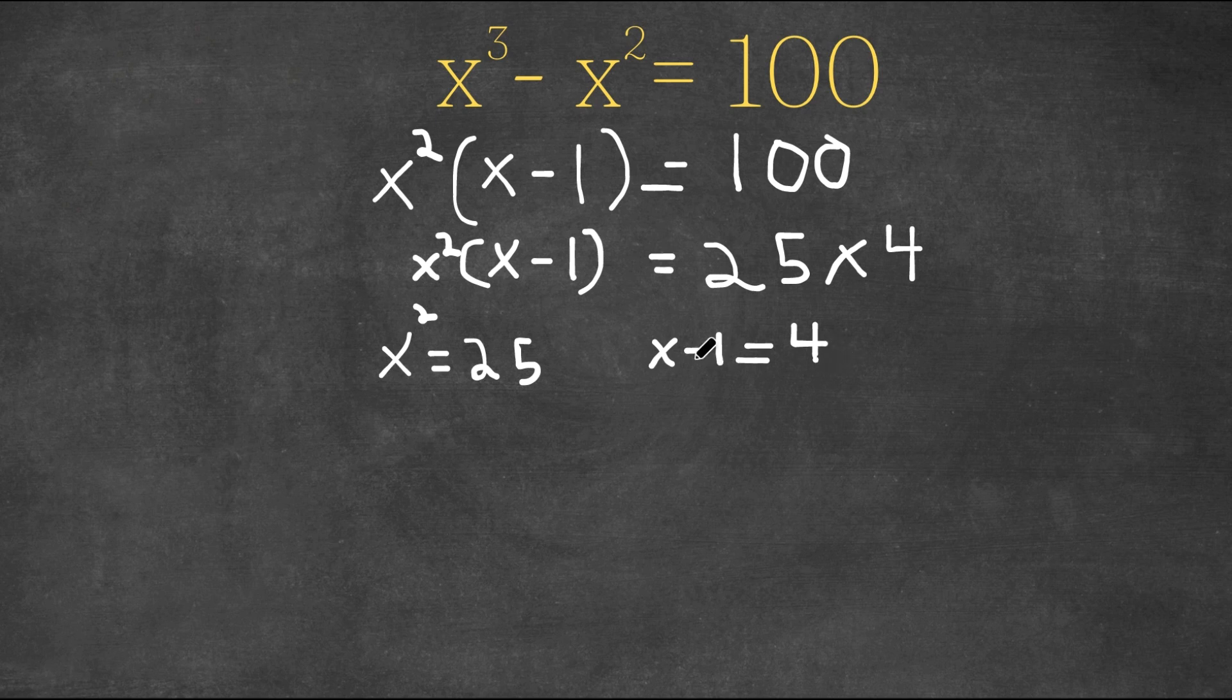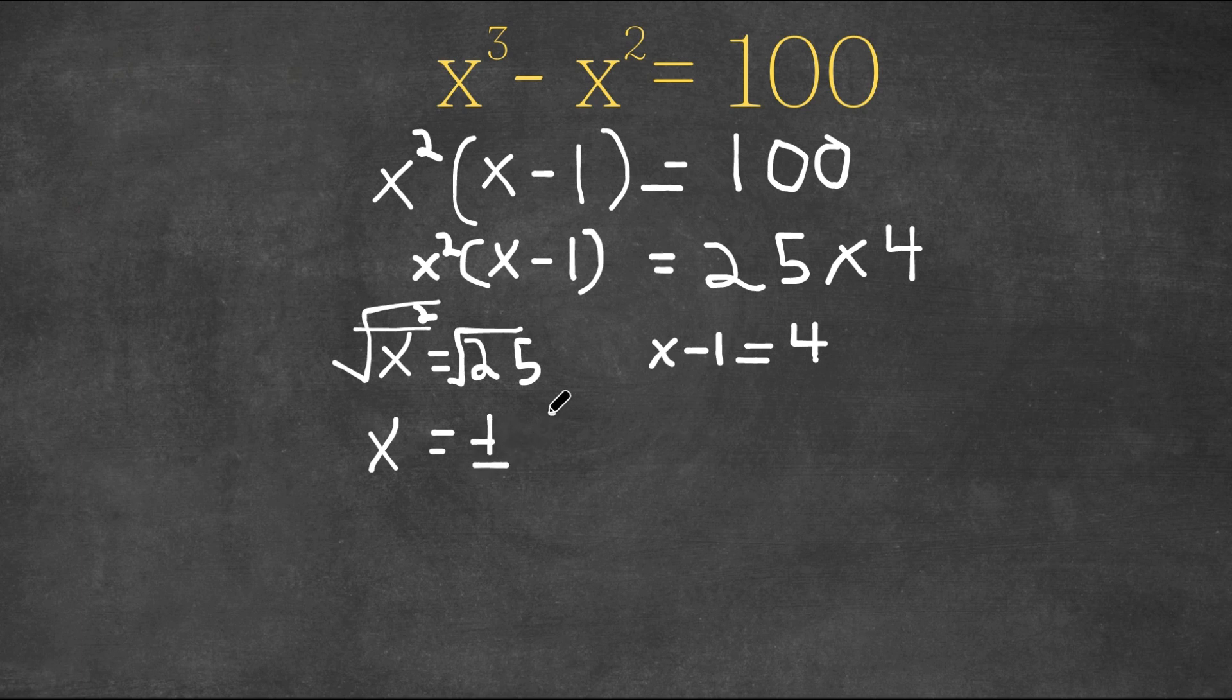Well, for x squared equals 25, if we do the square root on both sides, we would get the square root of x squared is simply x equals the square root of 25 is positive or negative 5.